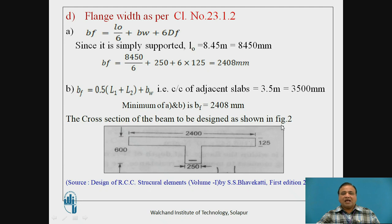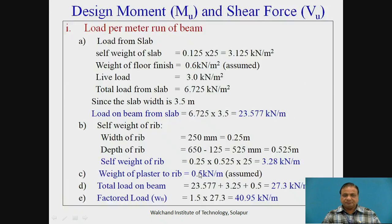The cross section of the beam to be designed is shown in figure 2 here below. This is the effective width of flange, 125 is depth of flange, and then 250 is width of rib. Load per meter of beam: load from slab, self weight is thickness into density 25 kN per cubic meter, it works out to be 3.125. Weight of floor finish is assumed 0.6 kN per meter square. Live load is given 3 kN per meter square. Total load on the floor slab is 6.725 kN per meter square. Since the slab width is 3.5 meter, load on the beam from slab equals 23.577 kN per meter.